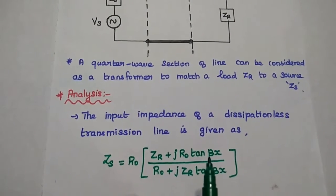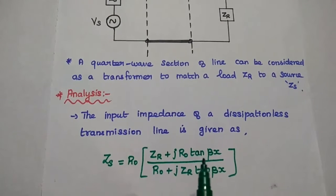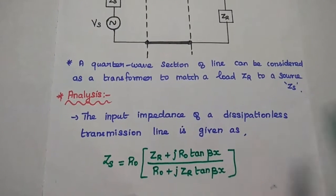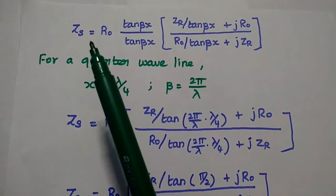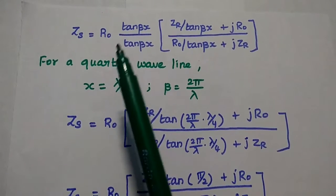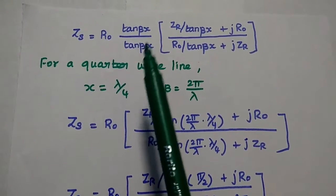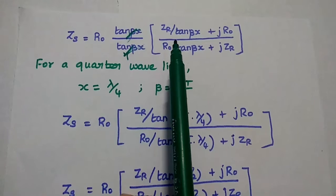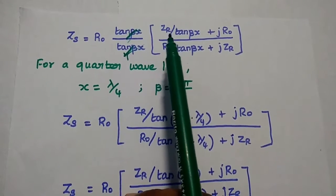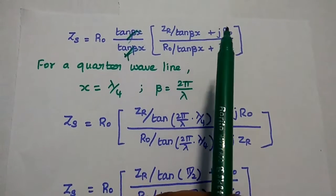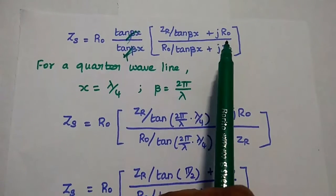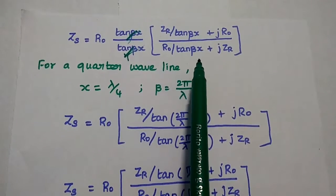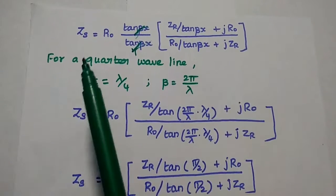For further simplification, we can take tan(βx) as a common factor from the numerator and denominator. Then we get Zs equal to R naught times tan(βx), where inside the bracket this value becomes ZR divided by tan(βx) plus j R naught, all divided by R naught divided by tan(βx) plus j ZR.